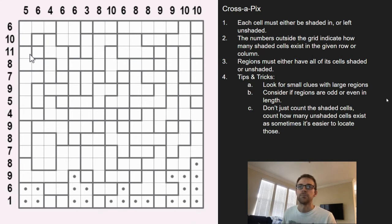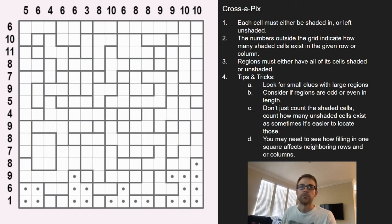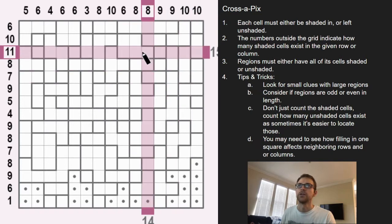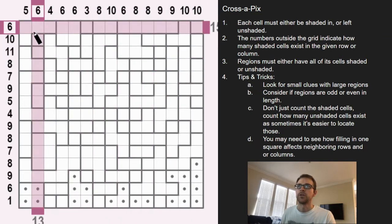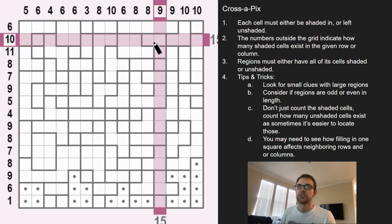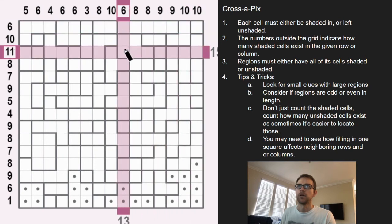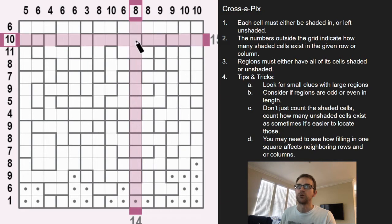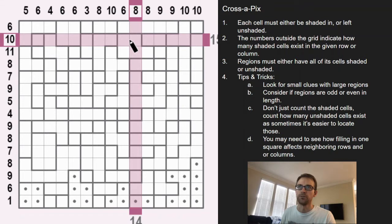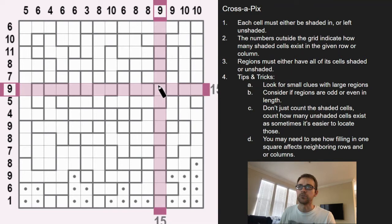For the tougher puzzles, you may need to see how filling in one square affects the neighboring rows or columns if it spills over. For instance, if you had nine shaded cells in this 10-row but not these two, and you were to shade in one of these, it would spoil the clue above it because you can see how it spills over to the row above.